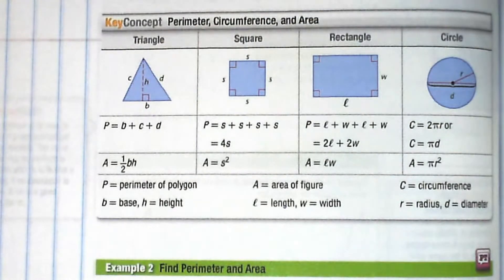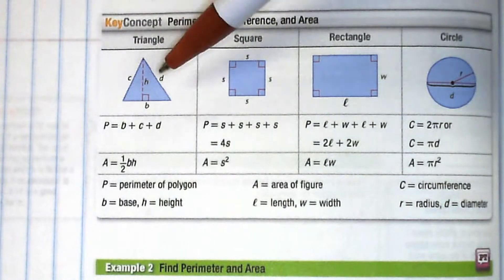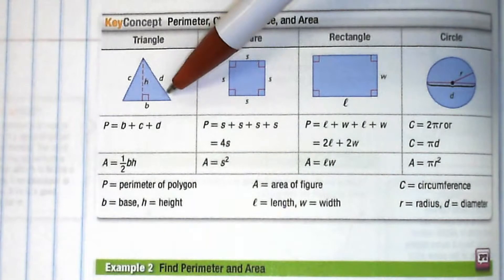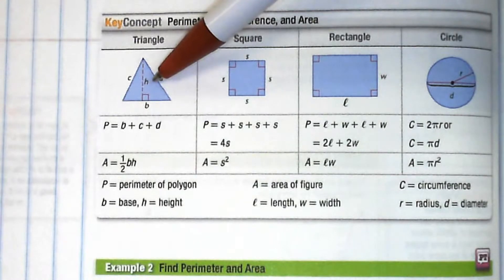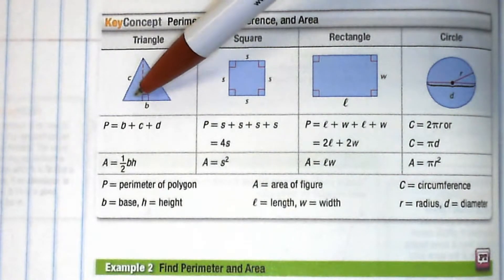For area, remember area of a triangle is one-half base times height. The reason why the half is there is because basically a triangle is half of a rectangle.